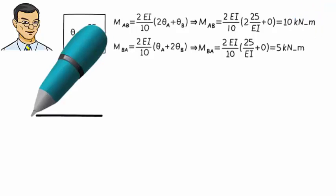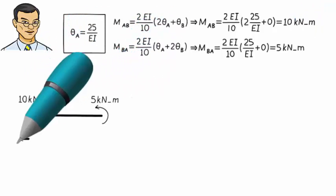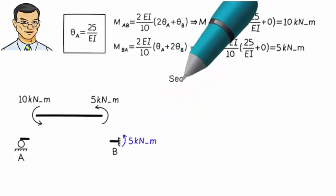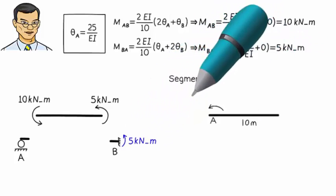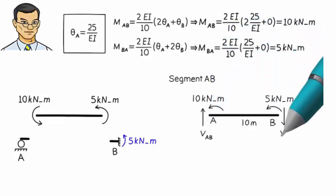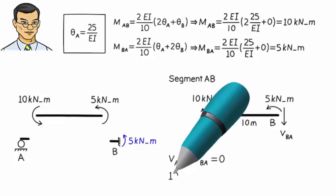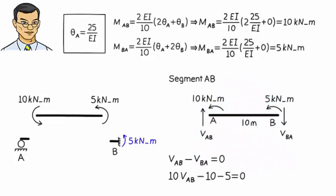Now that we have determined the member end moments, we can easily calculate member end shear forces. Here is the complete free body diagram for segment AB. So, we can write the equilibrium equations. Solving these equilibrium equations for the unknown shear forces, we get the final values.